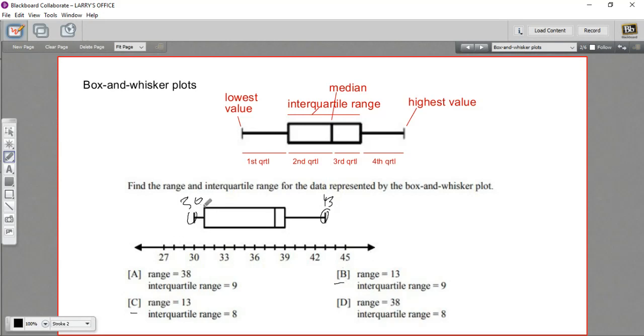Now, the interquartile range is the length of this box, and it looks like it starts at 31 and it goes up to 39. That would be a difference of 8. So our interquartile range would be 8. So it's got to be C. Let's look at another.